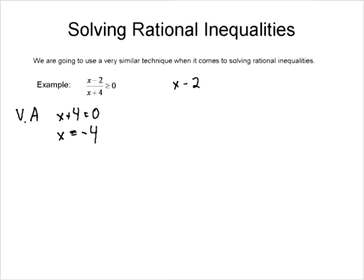We're going to take our inequality and set it equal to zero — make it an equation. If we set this equal to zero, the only way to get zero is if the numerator is zero. So x minus 2 has to equal zero, which tells us that x equals 2 is a possible solution.